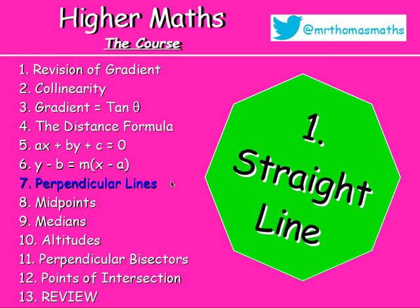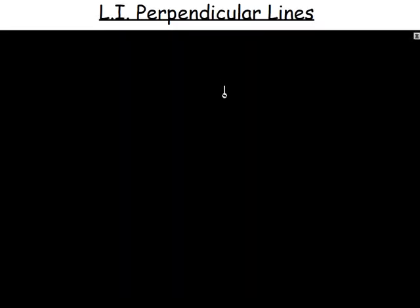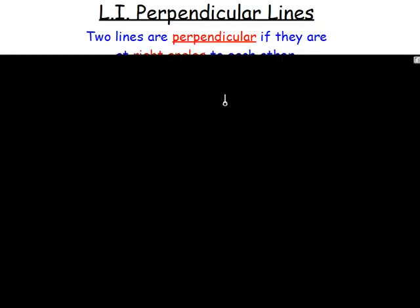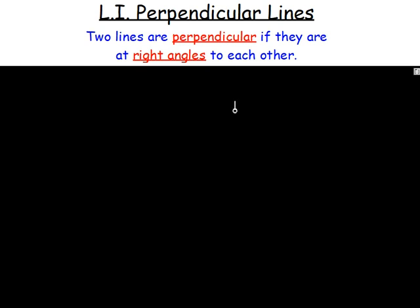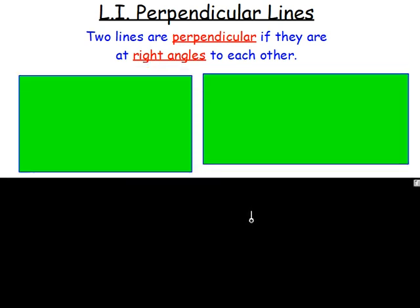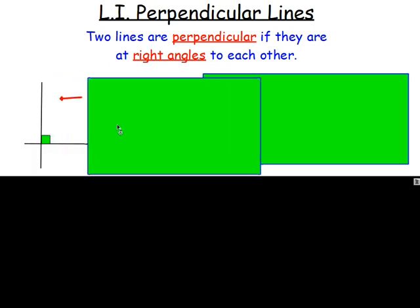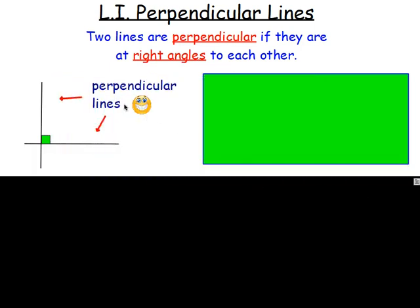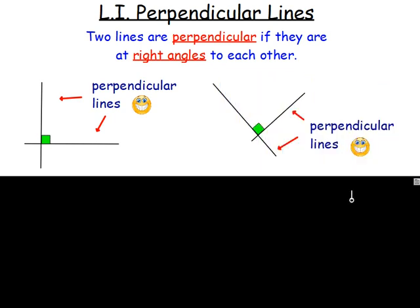The first thing you want to think about is what is meant by the word perpendicular — it's something you may have come across before. Perpendicular lines are two lines that meet at right angles. They're going to cross at a right angle. You can see in these two diagrams there are two lines meeting at a right angle, so they would be perpendicular. If you turn them around, they're still going to meet at right angles, so they would still be perpendicular.